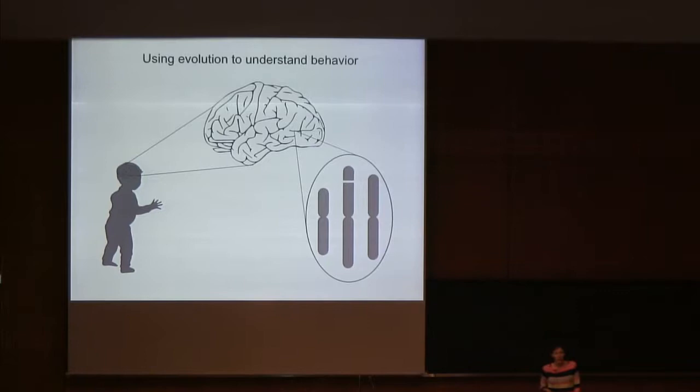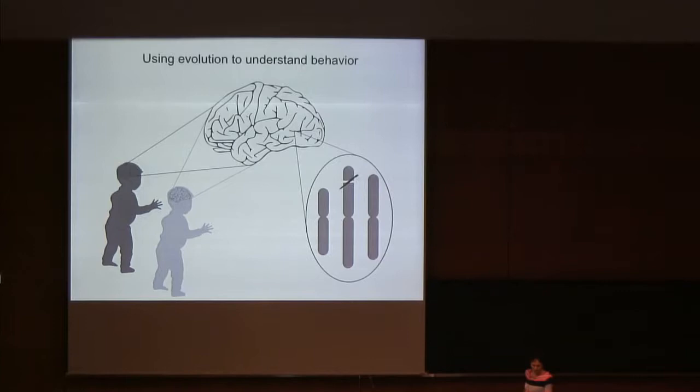One very common and successful way to address these questions is to artificially perturb genes and neurons and study the effects of those perturbations — for example, we can silence a gene of interest, knock out a gene, or silence a neuron.